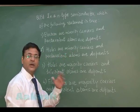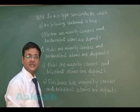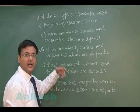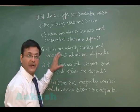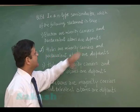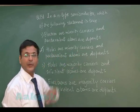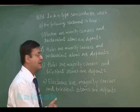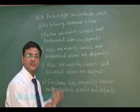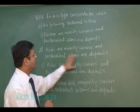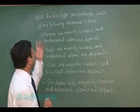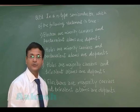The majority carriers are electrons because the dopants have more electrons — they are pentavalent. So the statement 'holes are minority carriers and pentavalent atoms are dopants' matches the answer. The rest of the options do not satisfy this condition, so the most appropriate option is the second one.